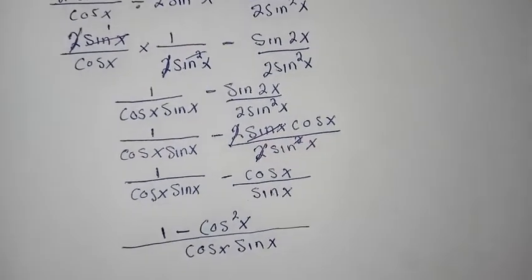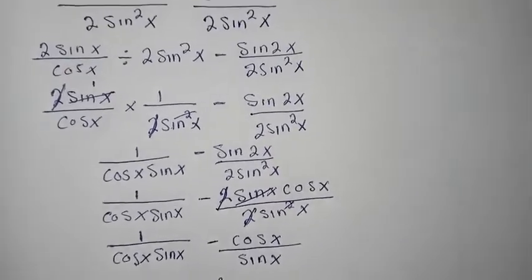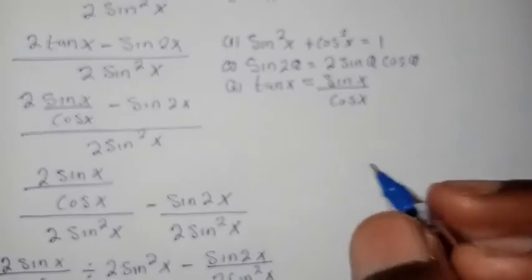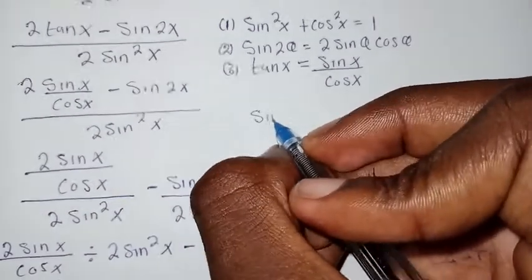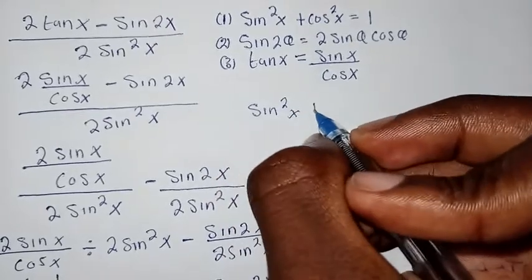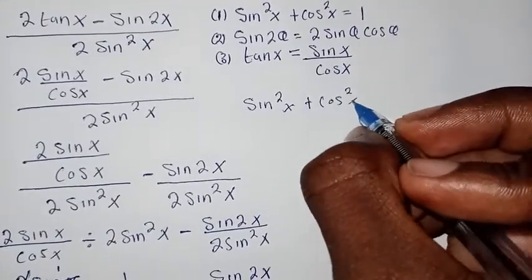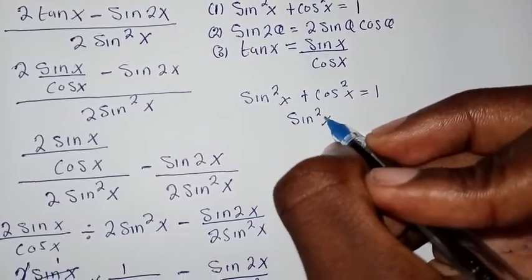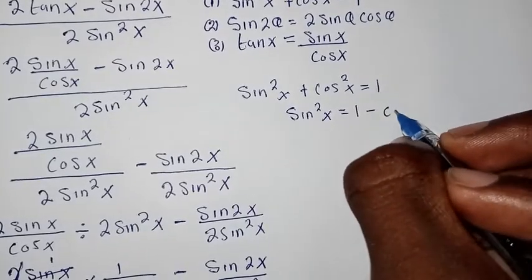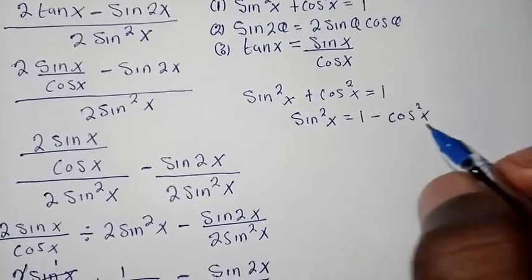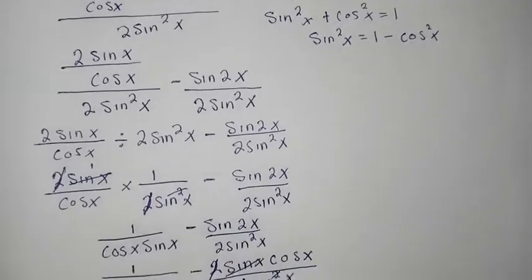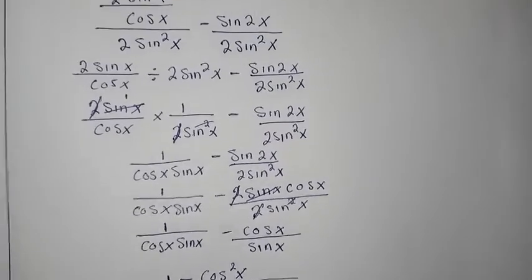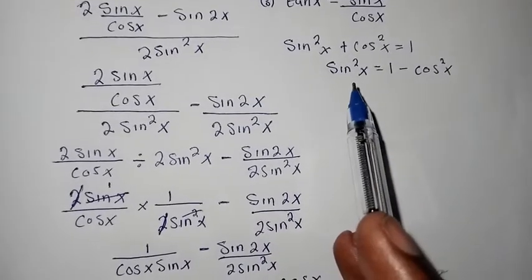Now remember the trig identity from the beginning: sine squared x plus cosine squared x equals one. Rearranging, sine squared x equals one minus cosine squared x. So we can replace the numerator one minus cosine squared x with sine squared x. Therefore the expression becomes sine squared x over cosine x sine x.